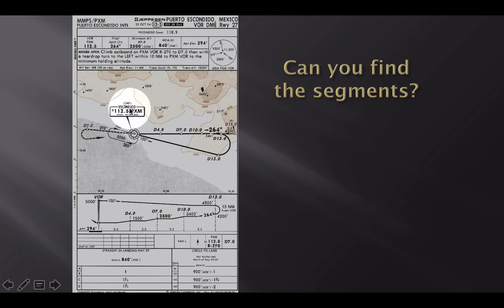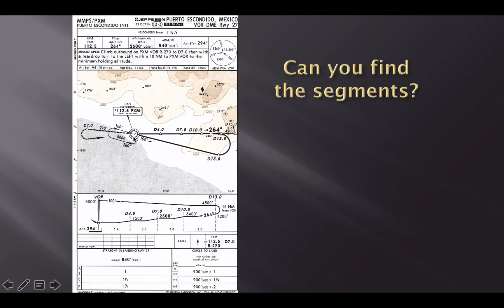First of all, notice that on the plan view, we can see very clearly that the IAF is the VOR PXM. I'm not even going to try to pronounce that. I didn't take Spanish in high school, so I don't really know. But notice that the IAF is the VOR, which means no matter where I'm coming from, there might be some airways leading to this VOR more than likely, or if I'm just told to fly direct to the VOR, I could be coming at all kinds of different angles.